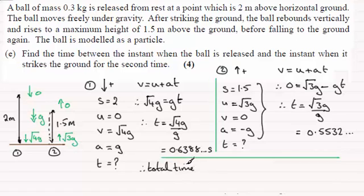That total time is going to be equal to this first time here, 0.6388 and so on. But plus twice this time, 2 lots of 0.5532 and so on.